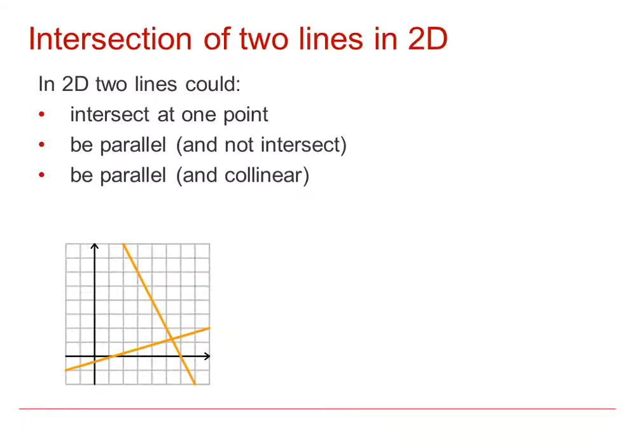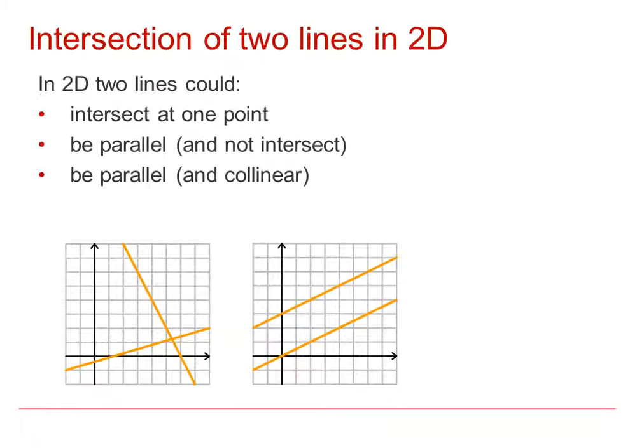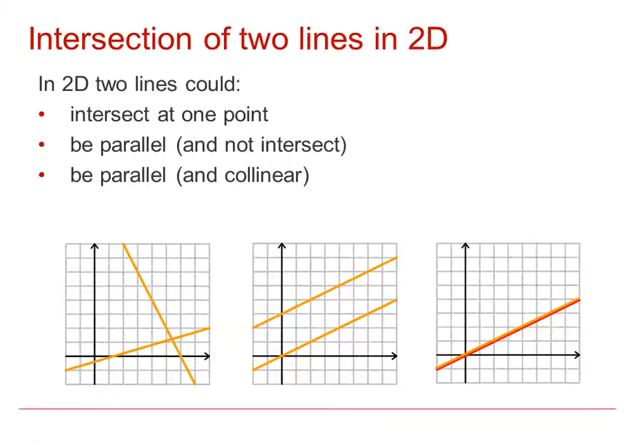So the first diagram here is showing two lines meeting or intersecting at a single point. The second diagram is showing parallel lines which do not intersect at all, and the third diagram is showing two lines which are collinear.